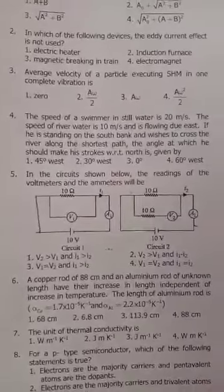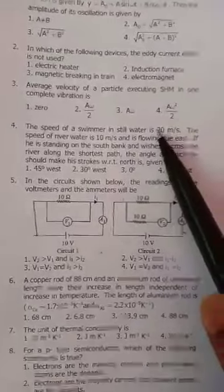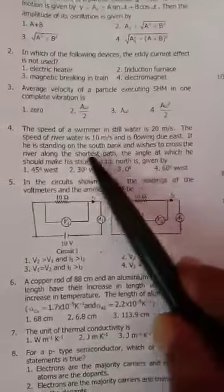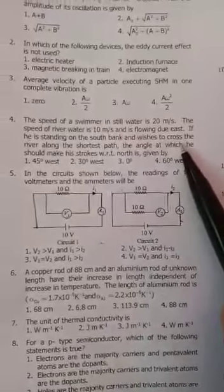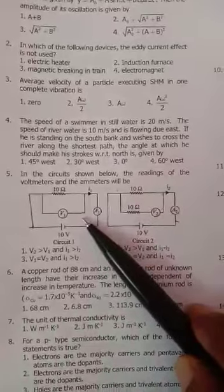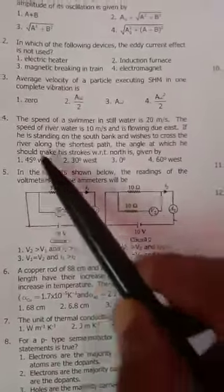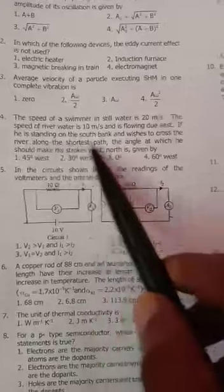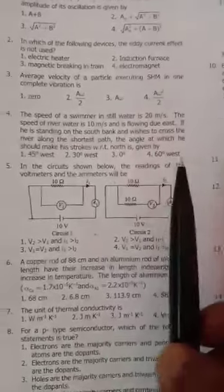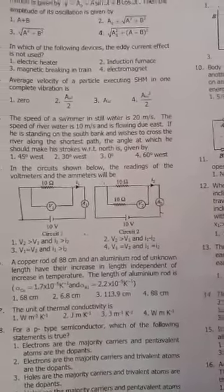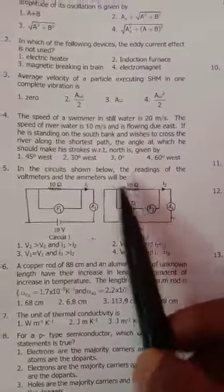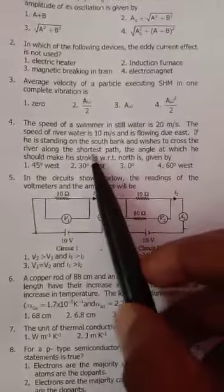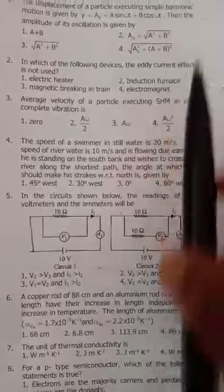Now question number 4. Man in still water speed is 20 meter per second. River speed is 10 meter per second towards east. He wants to cross the river along the shortest path. Now the shortest path, his effective velocity - effective velocity means the river velocity plus man's velocity is effective velocity, and the effective velocity is towards north.